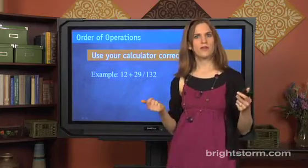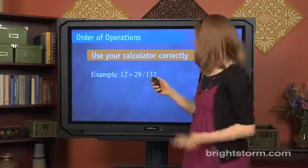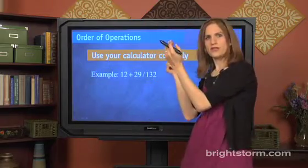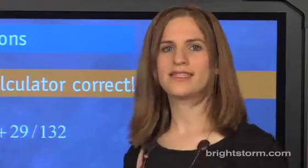Which is a completely different number than 12 plus parentheses on your calculator, 29 over 132, signifying to your calculator that that's a separate expression, a separate fraction or division that needs to happen first.